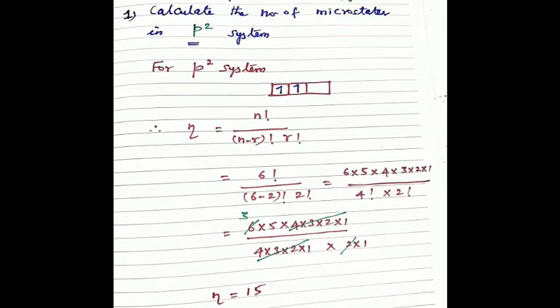So we calculate: 6 factorial divided by (6 minus 2) factorial into 2 factorial. That is 6 into 5 into 4 into 3 into 2 into 1, divided by 4 factorial into 2 factorial. The 4 factorial terms cancel, leaving 6 into 5 divided by 2. Six and 2 cancel to give 3, and 3 times 5 equals 15. So the number of microstates is 15.